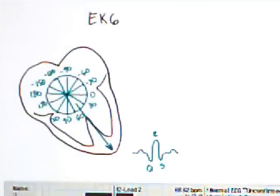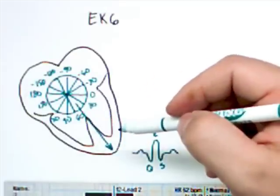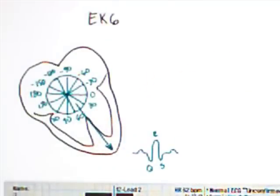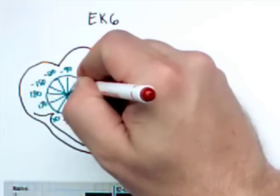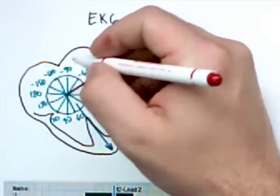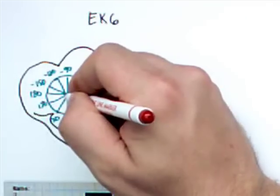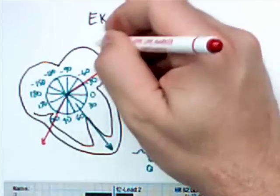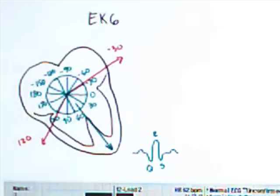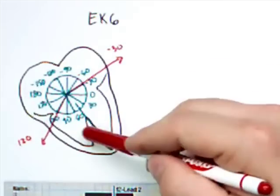So the QRS axis is usually given in terms of those numbers. And again, a normal QRS axis should be heading in this direction, technically normal, and be anywhere from minus 30 to plus 120.